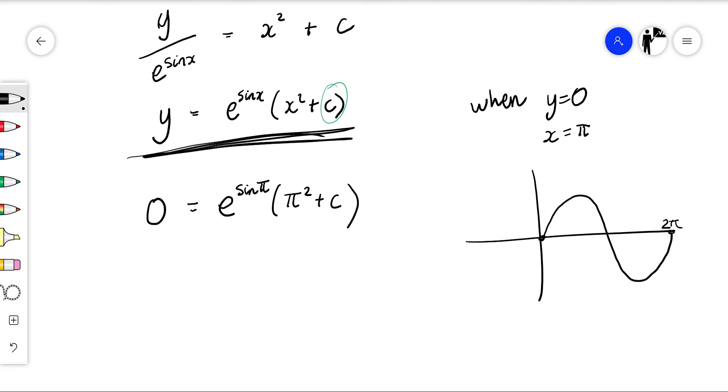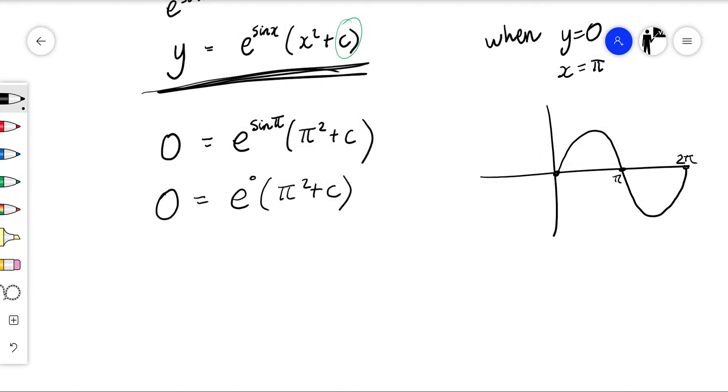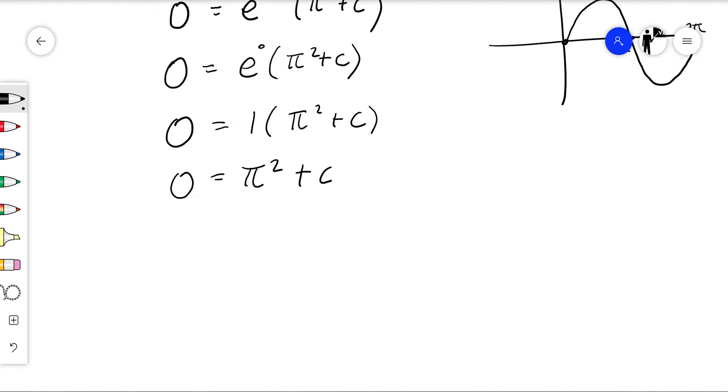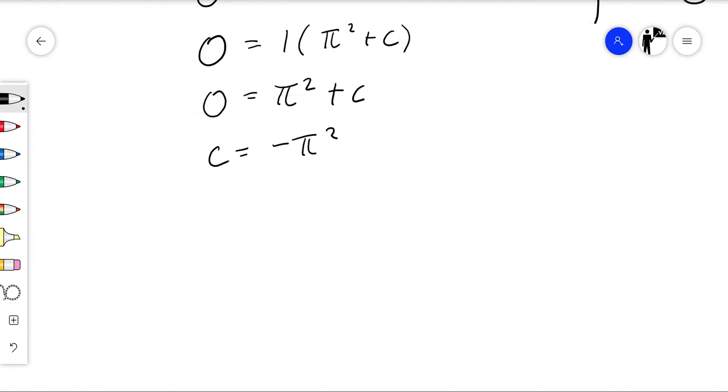Sine of π - let's just do a quick recap. The period of sine is 2π, so sine of π is 0. So this becomes 0 equals e to the power 0 times π squared plus c. Anything to the power 0 is 1, so 0 equals π squared plus c. If I want to find c, well c is going to be negative π squared.